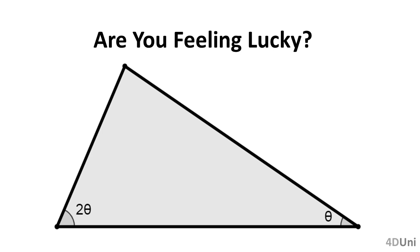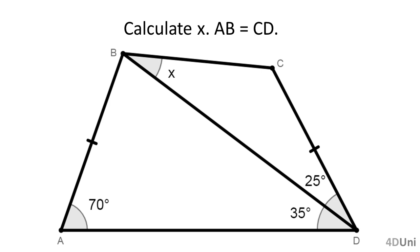In this video, we will solve a geometric problem to illustrate this. This problem asks us to calculate x given the measures of angles shown in the figure, and that segments AB and CD have the same length. One of the first things we should do is to use basic properties of angles in a triangle.